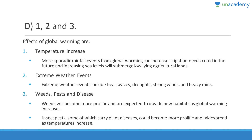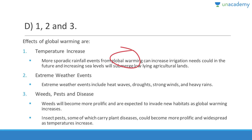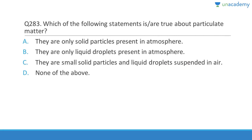Effects of global warming include temperature increase, more sporadic rainfall events, increased irrigation needs, rising sea levels submerging low-lying agricultural lands, extreme weather events, and increased weeds, pests, and diseases. All of these are absolutely correct, so answer is D (1,2,3).